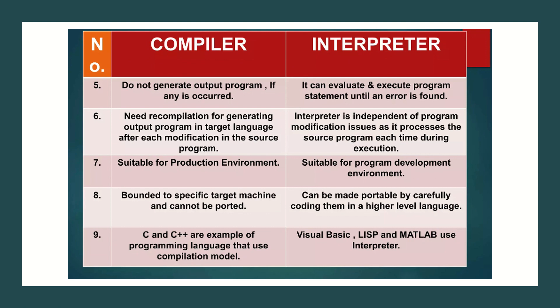Fifth, the compiler does not generate any output program if an error occurs. But the interpreter can evaluate and execute program statements until an error is found. The compiler needs recompilation for generating the output program after each modification in the source program, whereas the interpreter is independent of program modification issues as it processes the source code each time during execution. The compiler is suitable for a production environment, whereas the interpreter is suitable for a program development environment. The compiler is bounded to a specific target machine and cannot be ported, but the interpreter can be made portable by carefully converting the code in high level language.